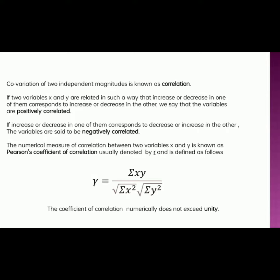The numerical measure of correlation between two variables x and y is known as Pearson's coefficient of correlation, usually denoted by R, and it is defined as follows: R equals sigma xy divided by the square root of sigma x squared into the square root of sigma y squared.